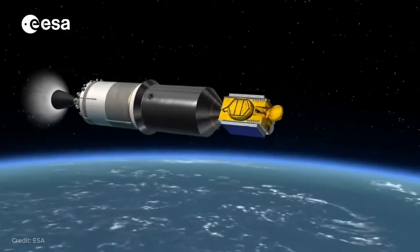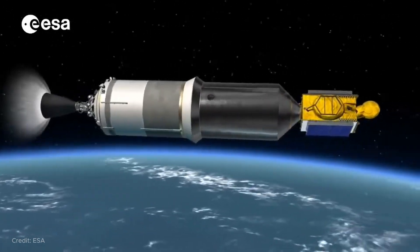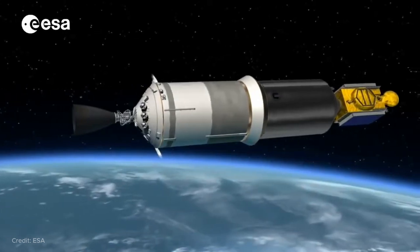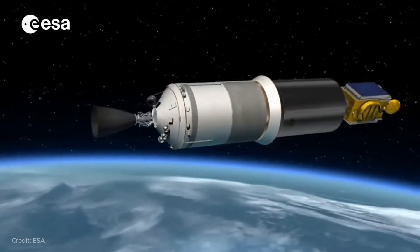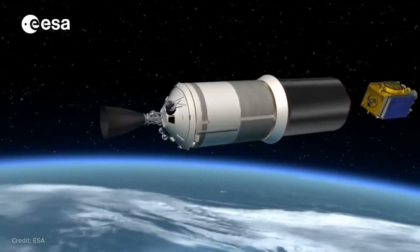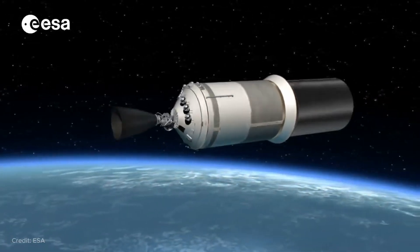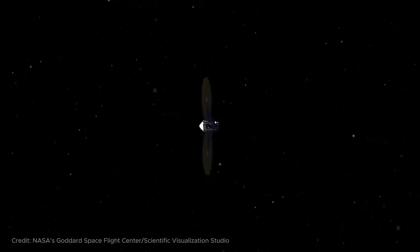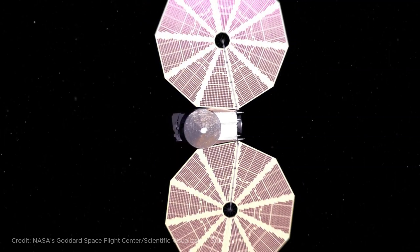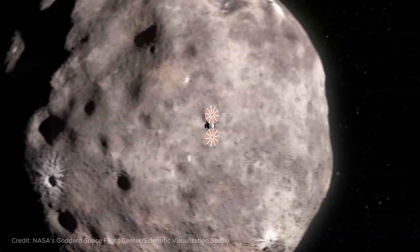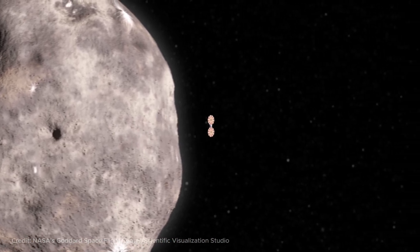The peculiarity of this point is that, as I mentioned, points L1 and L2 are points of unstable equilibrium. Therefore, all such space observatories have jet engines that slightly correct the movement of the spacecraft, forcing it to maneuver around the Lagrange point L2 without leaving its vicinity. This is how all space observatories sent their work. They need a reserve of jet fuel. When it runs out, the spacecraft will gradually leave the vicinity of this point.